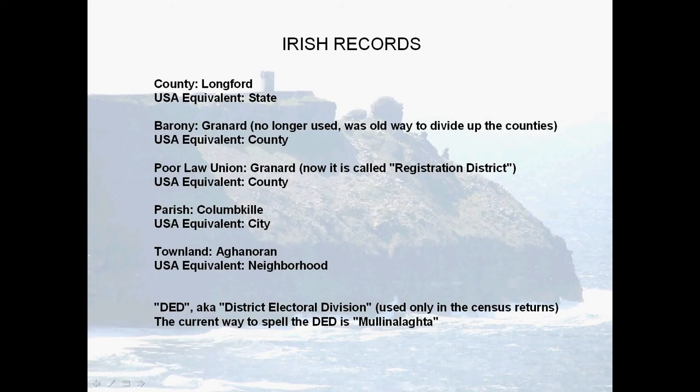When hunting for Irish records, we want to pay attention to how they refer to areas. Ireland — the whole island — is divided into counties, which are equivalent to a state in America. Barony and Poor Law Union are equivalent to our county level; it is how they divided the counties into different districts, currently called registration districts. Parish does not mean a church parish — it means the civil parish, an area equivalent to an American city or large town. The townland is our ultimate goal, equivalent to an American neighborhood or small town near a city.